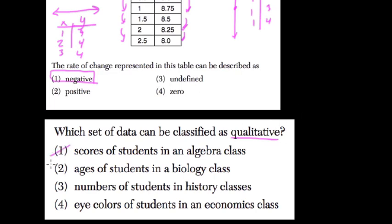So scores are based on numbers. Ages are based on numbers. The numbers of students are obviously based on numbers.